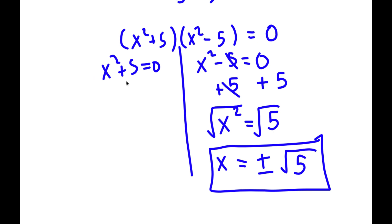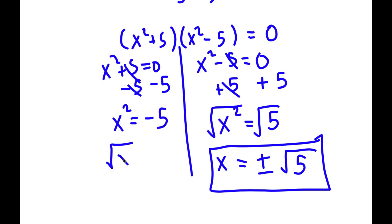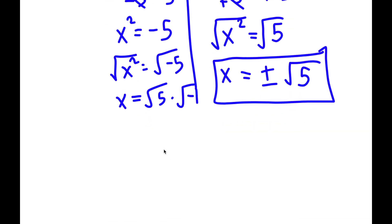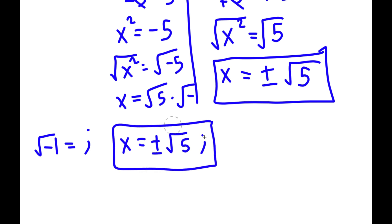Now for x squared plus 5 equals 0 — subtracting 5 from both sides, these cancel out and I have x squared equals negative 5. Taking the square root on both sides, x equals the square root of negative 5. I can write this as the square root of 5 times the square root of negative 1, and the square root of negative 1 equals i. So x equals positive or negative square root of 5 times i. These are my four solutions.